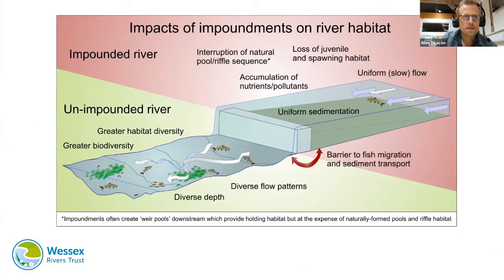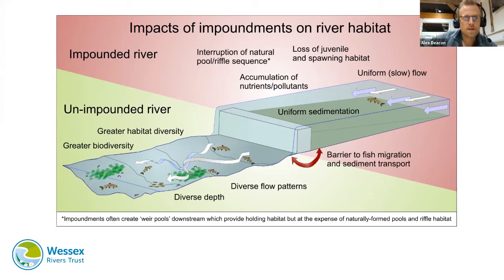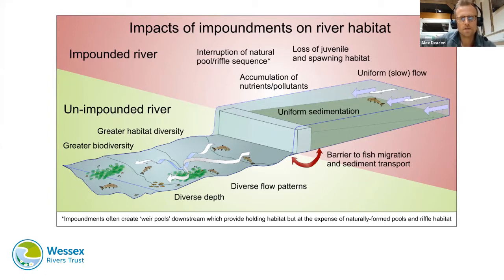This diagram shows the impounding effects of in-channel barriers, weirs, and sluices. Downstream of a barrier there is a diversity of habitat, reflected in higher biodiversity. Just upstream in the impounded reach, the riverbed is often smothered in silt with much less variation in flow and a rather uniform channel shape, which provides far less habitat.